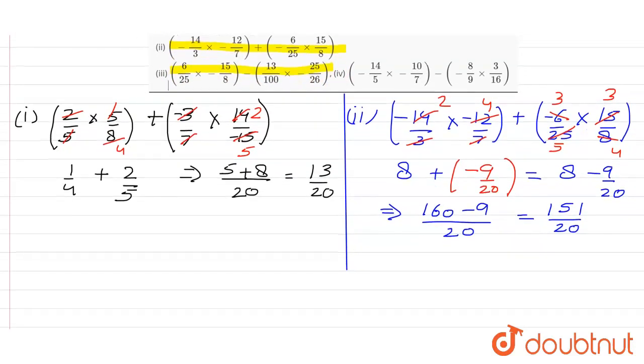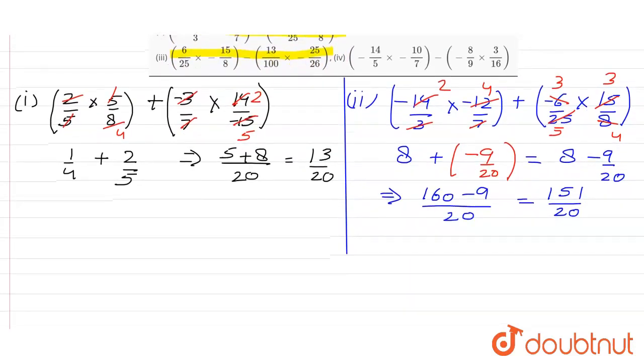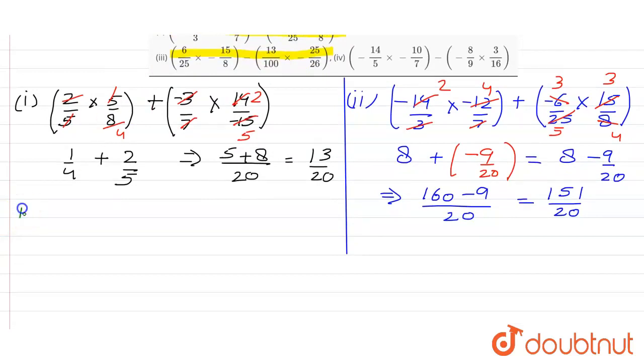So let me copy that first. So in this they gave us 6 by 25 multiplied with negative 15 by 8, which is subtracted 13 by 100 into minus 25 by 26.